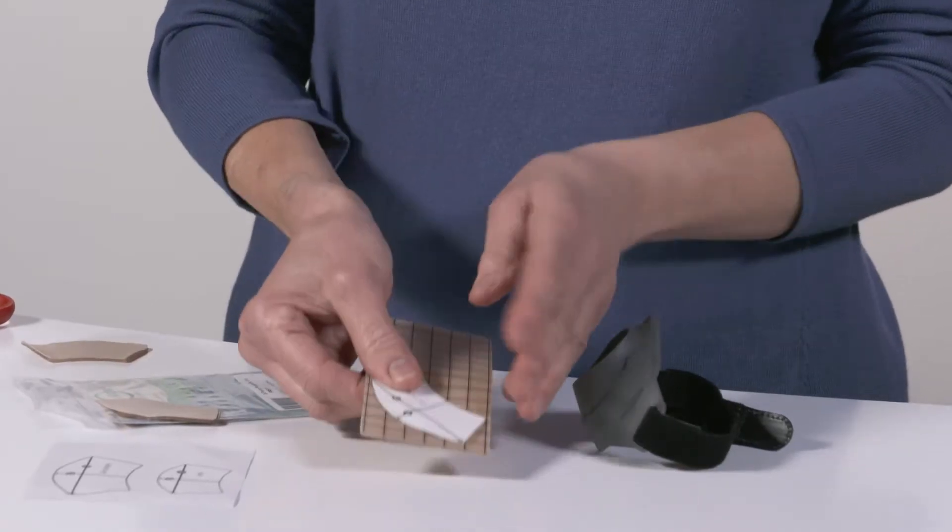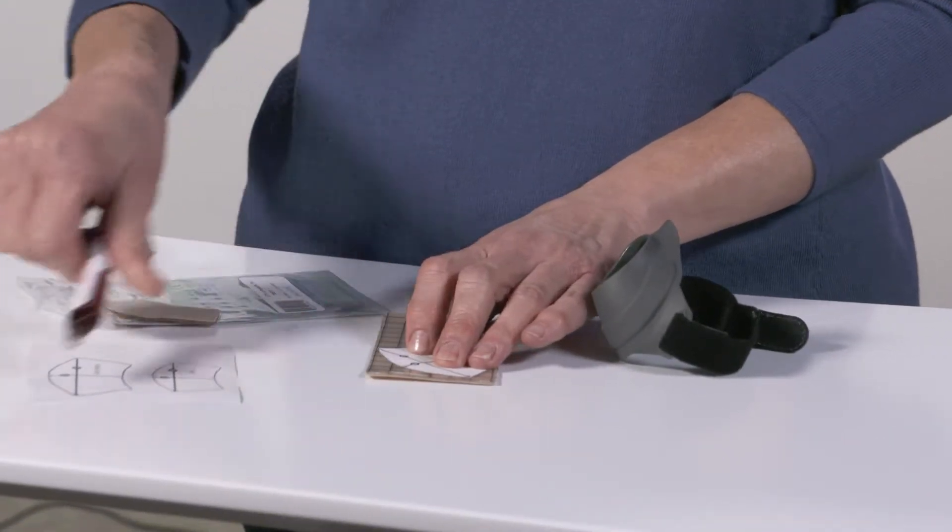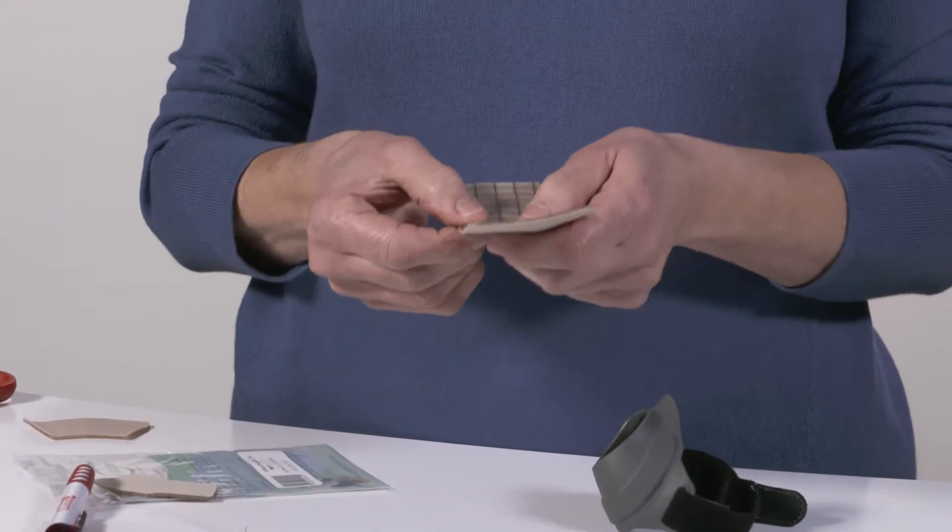Take your pattern, place it on the back of the gel sheeting, and using a pen, trace around the pattern so that you can cut it out of the gel.